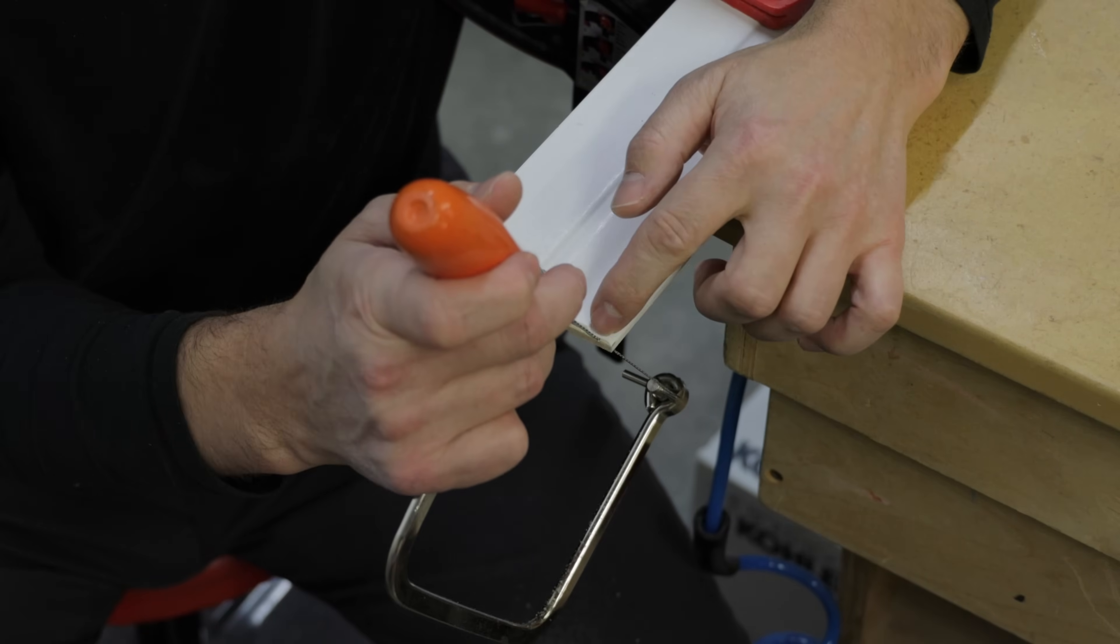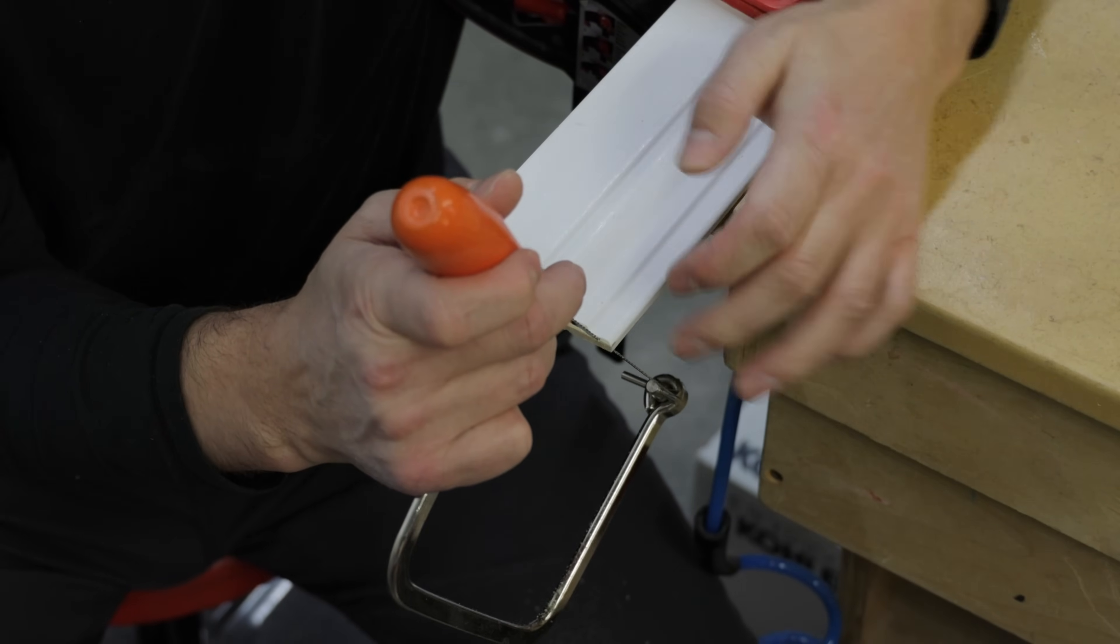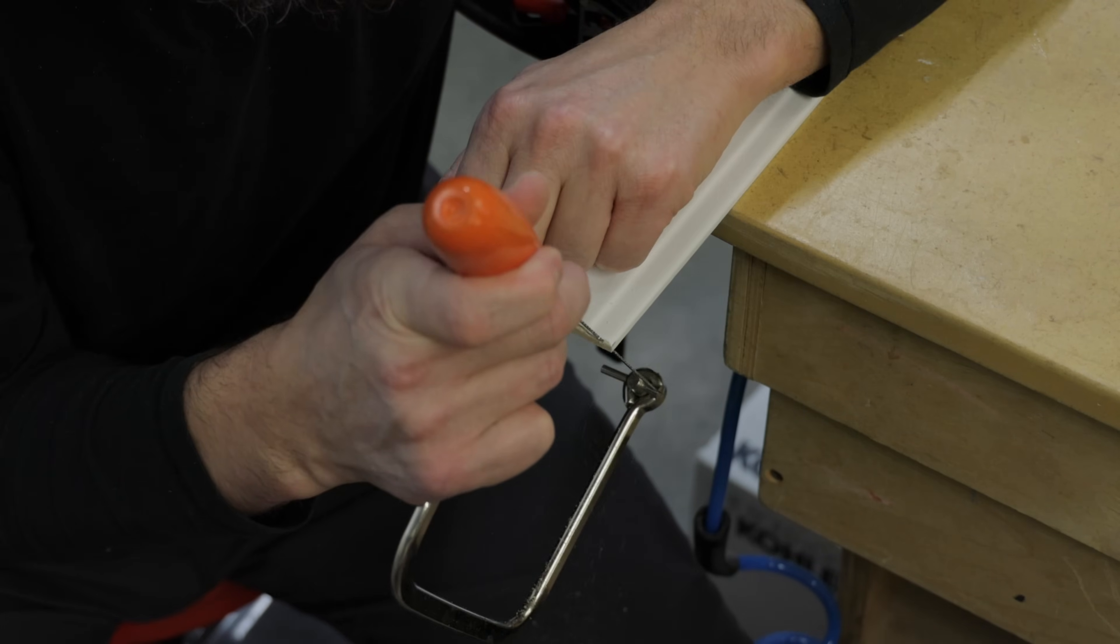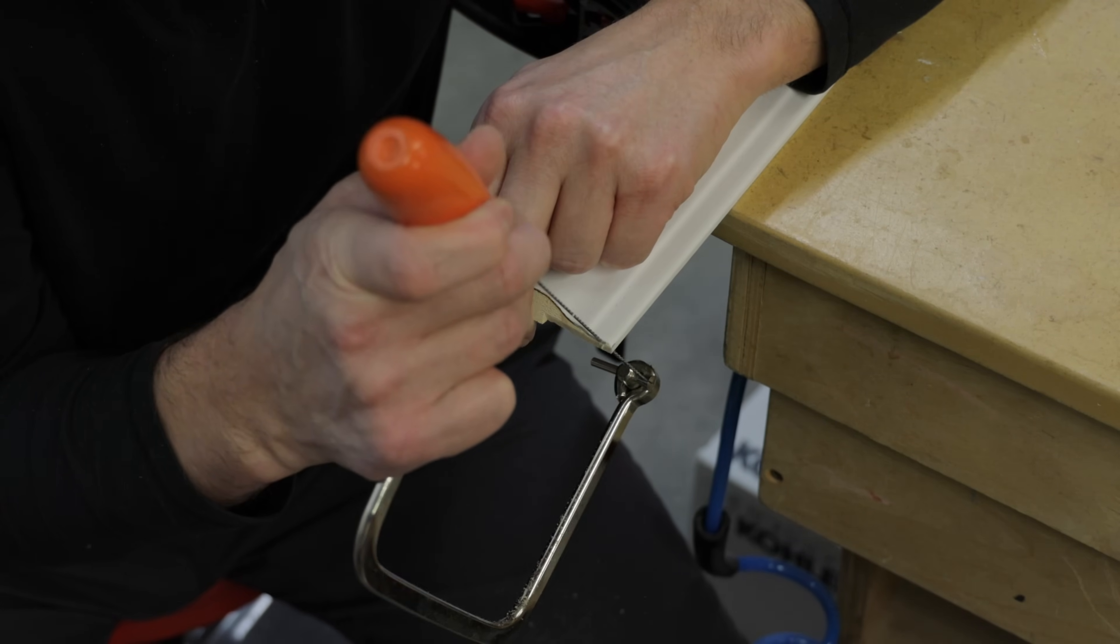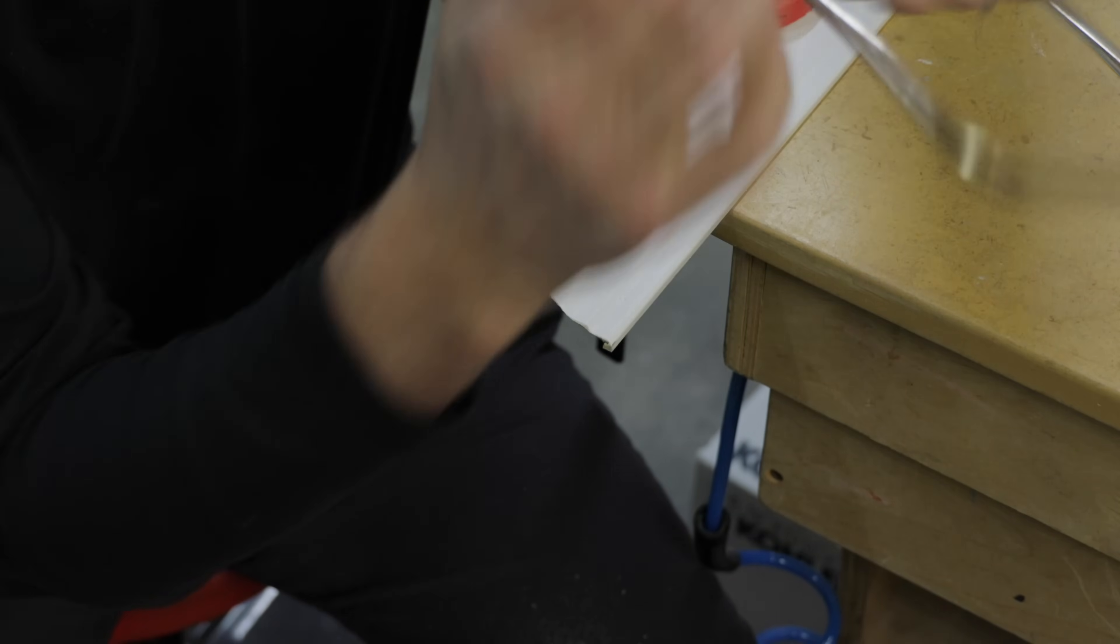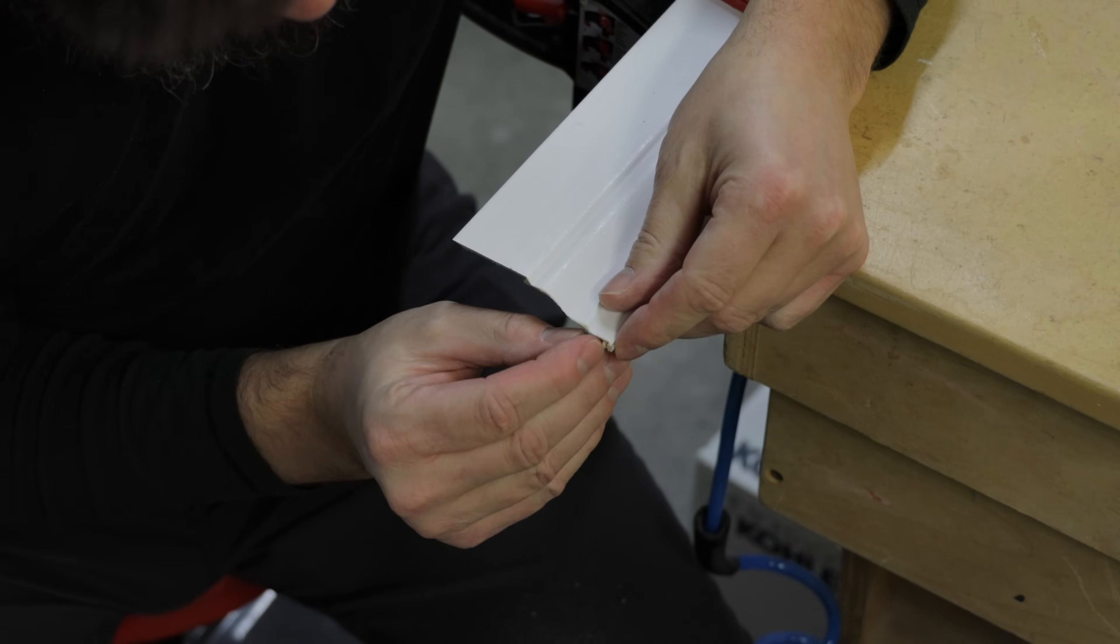And then when you get to the end here, you want to be careful that you don't cut that back cut all the way through the top edge. You want to leave this part here square so that it's going to butt in nicely. So yeah, you can see I cut pretty dang close there. Actually, there's not going to be a lot of sanding.